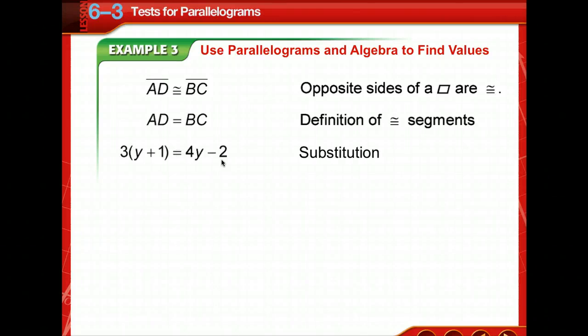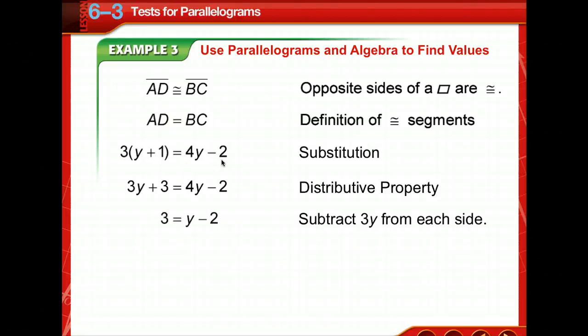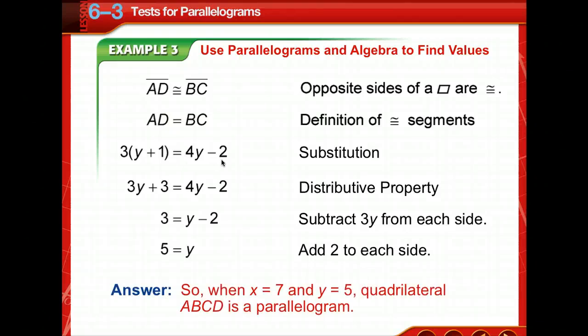Now AD is equal to BC, so we can solve for Y. Use the distributive property. Subtract 3Y from both sides, add 2 to both sides, so Y is equal to 5. So when X is 7 and Y is 5, this quadrilateral is a parallelogram.